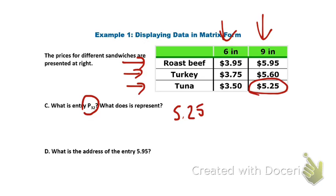And we can also go backwards and we can find the address. So if we have entry 5.95, we find 5.95, which is right here. We establish what row it's in, which is row one. And then we establish what column. So column one and column two. So the address of 5.95 would be row one, column two.